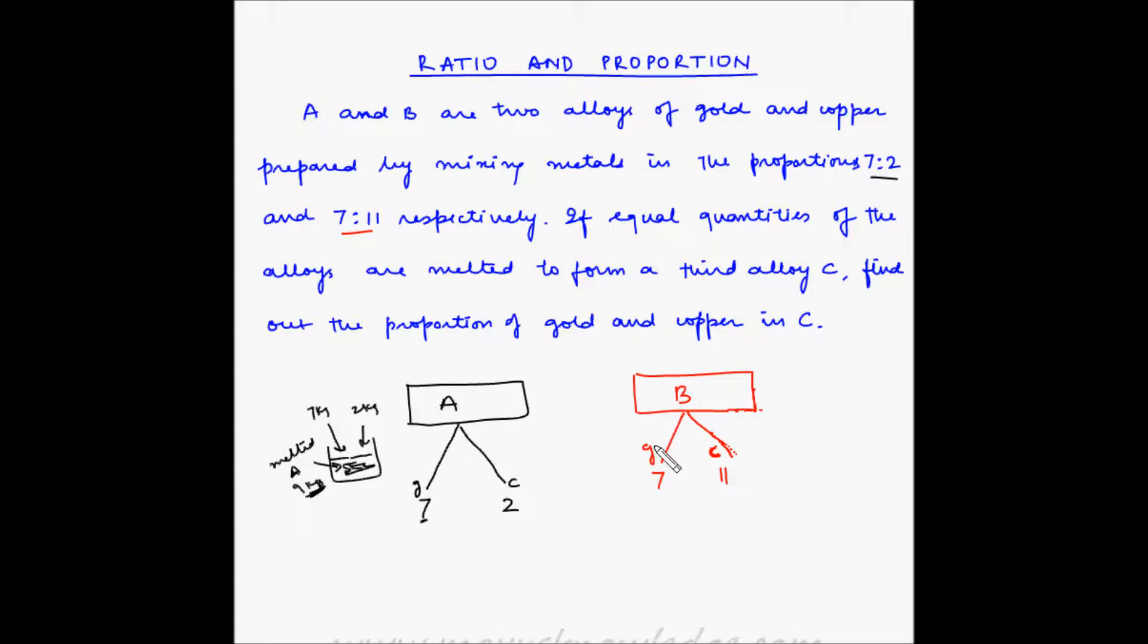Similarly, for B, 7 out of 7 plus 11 is 18. So 7 out of 18 parts in any quantity of B is gold, while 11 out of 18 parts in any quantity of B is copper.